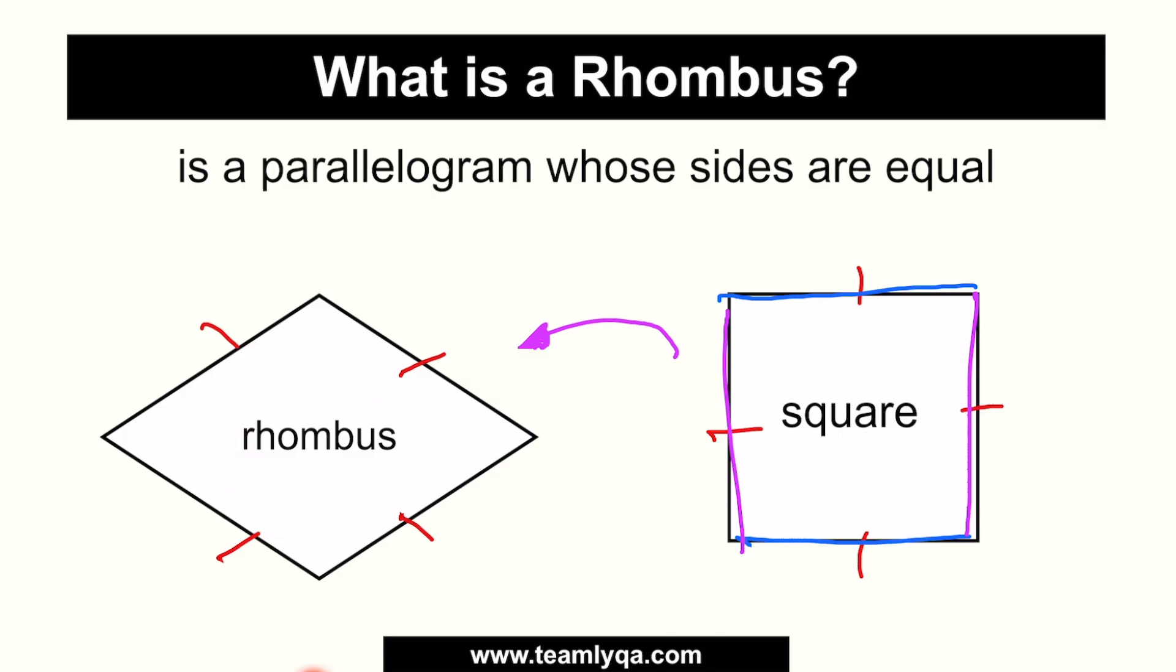However, not all rhombuses are squares. Why? Because a square requires that its corners, the intersection of the sides, be 90 degrees. And if you notice, there are rhombuses where the angle is not 90 degrees. So, that means again, all squares are rhombuses, but not all rhombuses are squares.